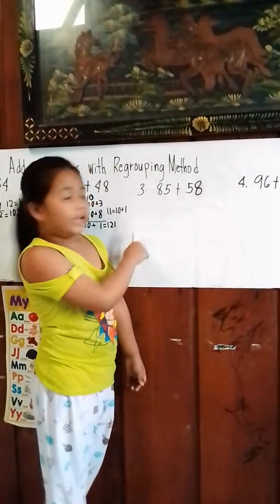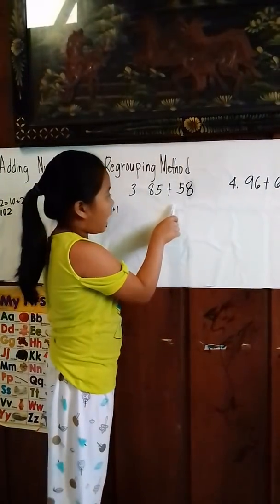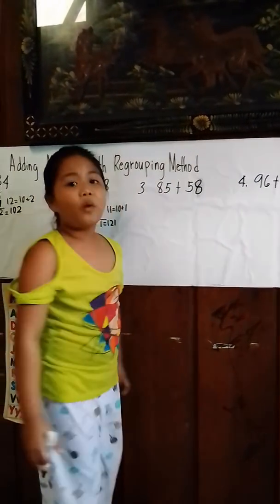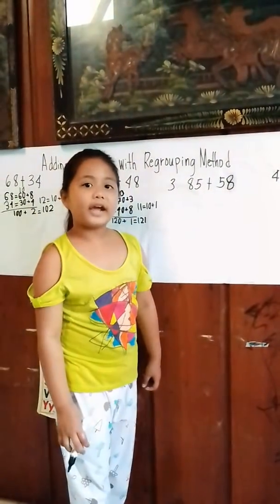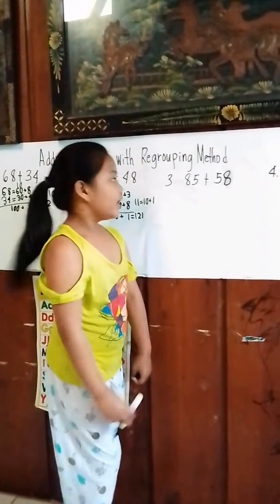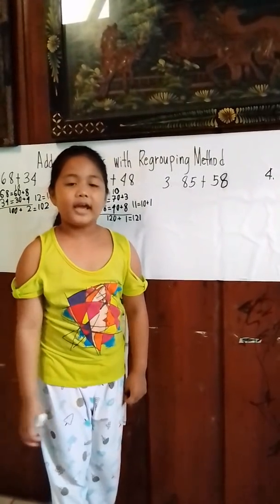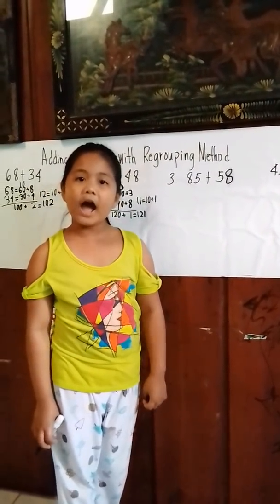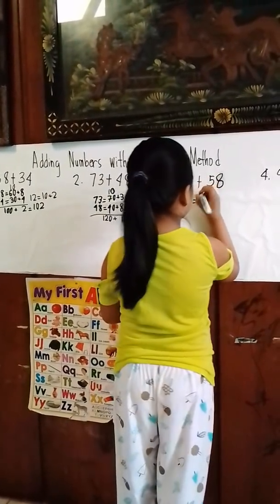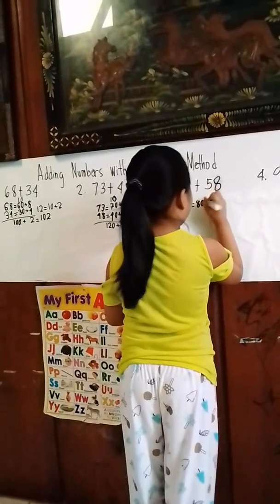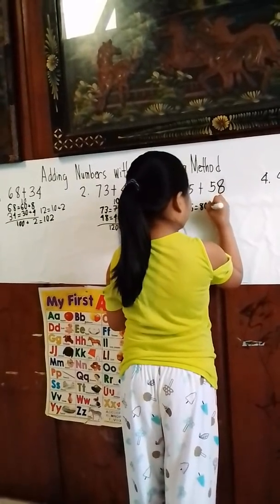Number 3: 85 plus 58. What is the grouping of 85 and 58? Let's find out. The grouping of 85 is 80 plus 5. The grouping of 58 is 50 plus 8.